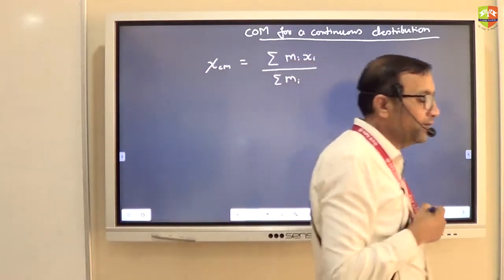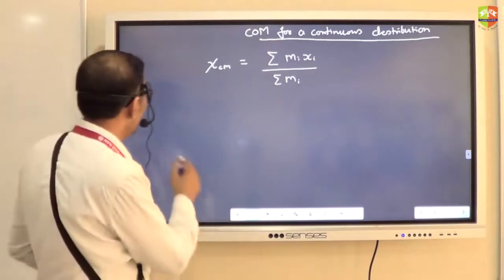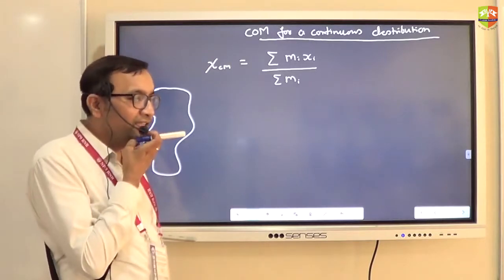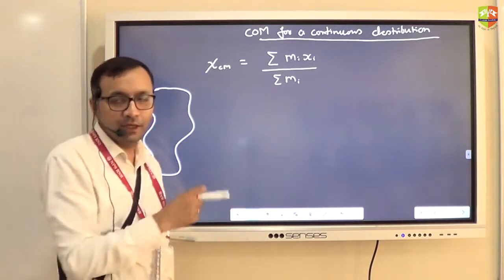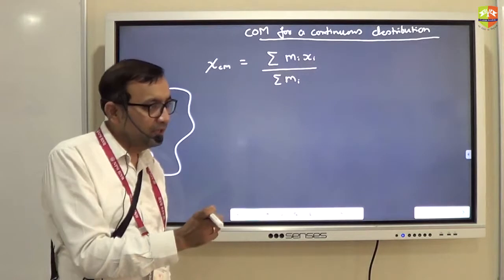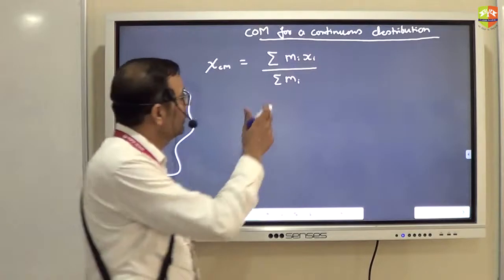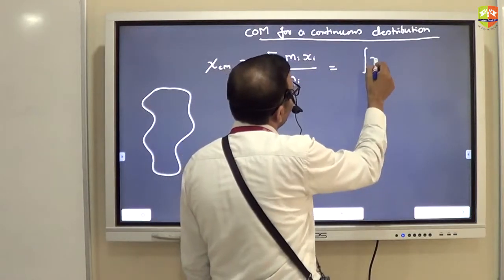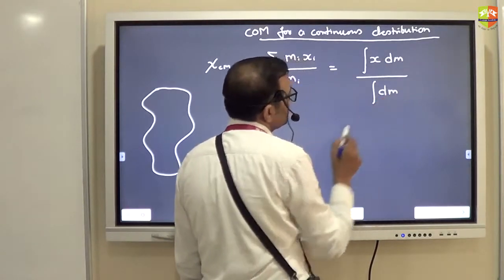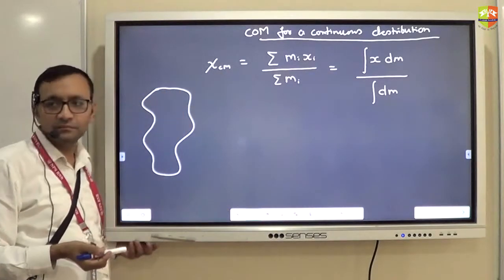For an irregular shape object, I assume the entire big object is made up of small masses dm, each at location x. So the numerator becomes integral of x dm, and the denominator becomes integral of dm. Therefore, x_cm = ∫x dm / ∫dm. Summation is transformed into integration — and integration is just summation.